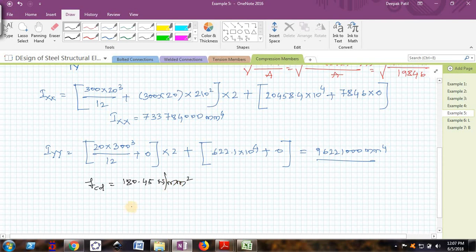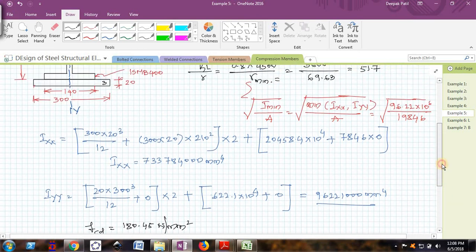I can easily find the value of P_D = 180.45 multiplied by the total area which is 19846. Therefore, P_D = 3581.2 kN.